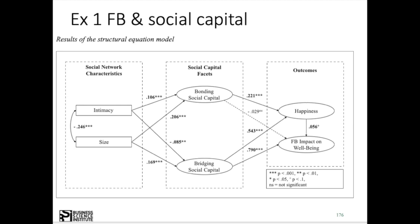We see that network size also impacts positively and highly significantly both bonding social capital and bridging social capital. So we accept hypothesis 2, both at a highly significant level. The mediating variables bonding capital and bridging capital have, in line with hypotheses 3 and 4, a positive and highly significant impact on happiness. In contrast to our hypothesis 5, we reject it because the link of bonding capital on Facebook impact on well-being is non-significant.